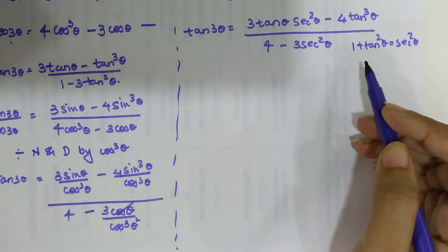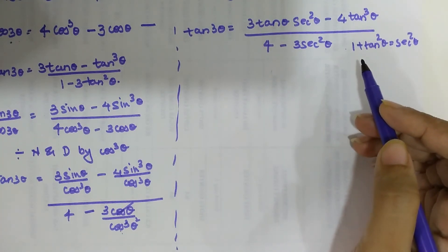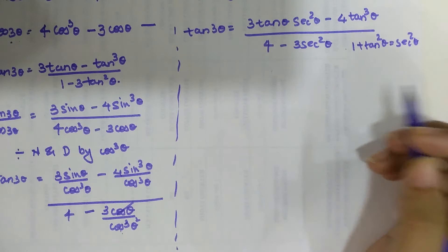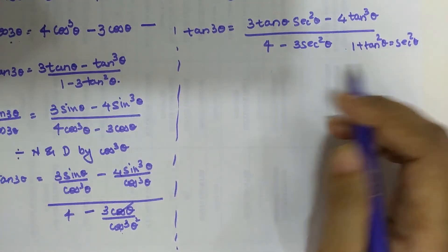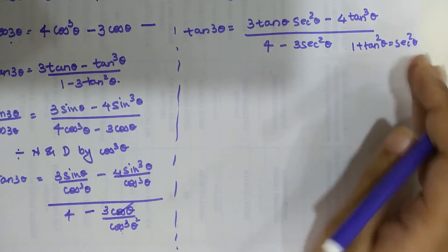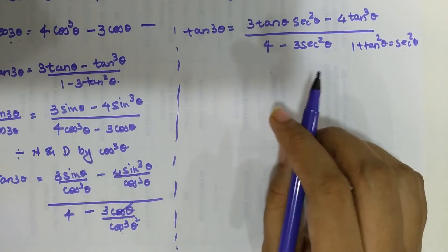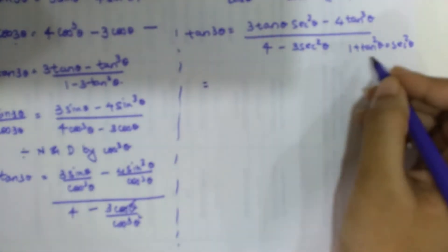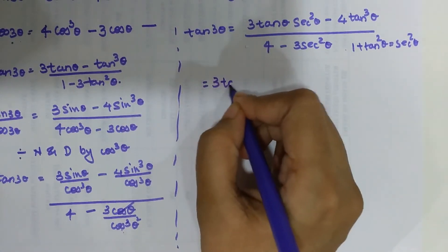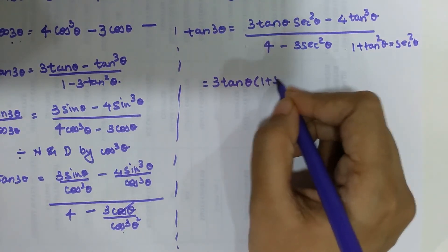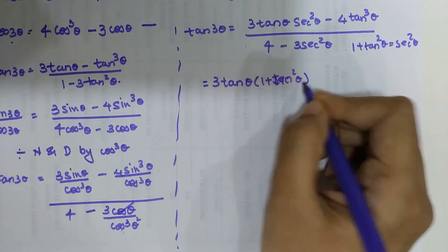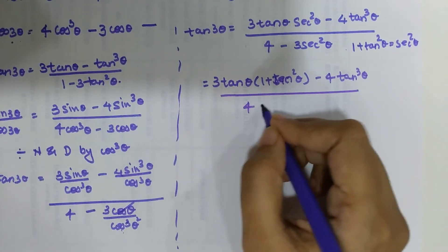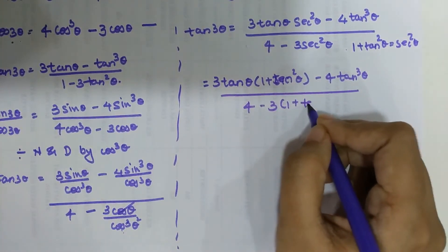Since the final answer should be only in terms of tan, we'll convert all sec² terms using the identity 1 + tan²θ = sec²θ. I have a three-minute video showing a trick to remember these identities — the link is mentioned on top and in the description. So, replacing sec²θ with 1 + tan²θ everywhere: we get 3 tanθ(1 + tan²θ) minus 4 tan³θ, upon 4 minus 3(1 + tan²θ).